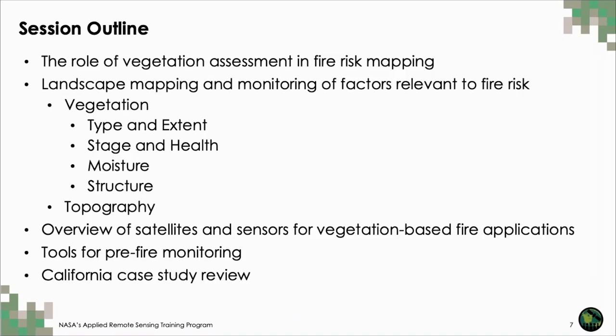Given the varied tools we have available to assess vegetation-based factors of fire risk, we'll be covering a wide range of topics today. First, we'll discuss fire risk mapping and how vegetation assessment fits into the framework of fire risk assessment. Next, we'll discuss vegetation metrics and physical conditions we can assess using remote sensing to characterize vegetation fuels and ignition likelihood. Then we'll go over relevant satellites and sensors and a variety of online tools for visualizing and mapping fuels at the pre-fire stage. We'll finish with a case study assessment of vegetation moisture metrics relevant to the fires that occurred in California over the 2020 fire season.